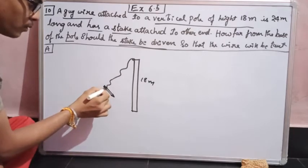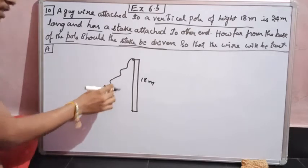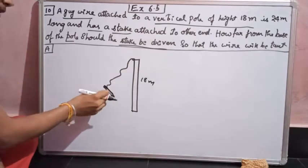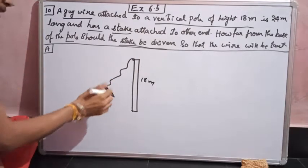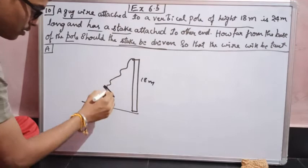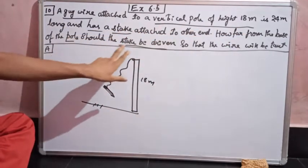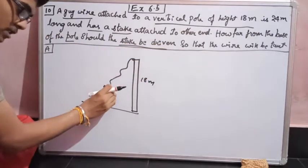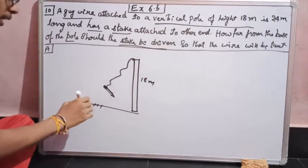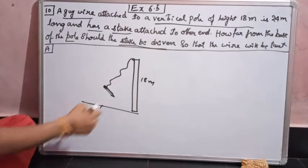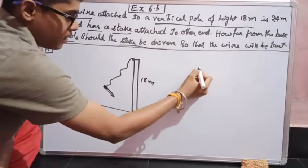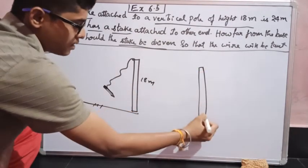This stake is nothing but a pointed wooden piece which is used to stretch this cable tightly and stick it to the ground. He is asking how far from the base of the pole should the stake be driven. We need to take this stake and put it into the ground such that this wire will be tightened.